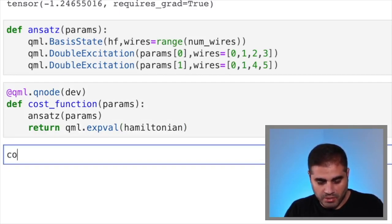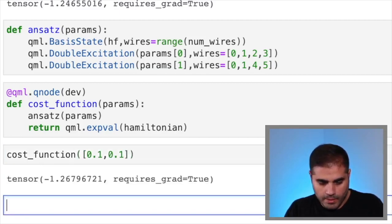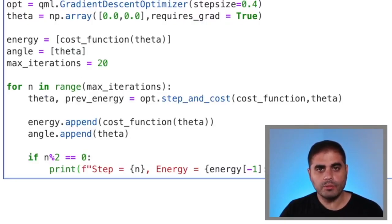Now let's see what happens if we run this for a couple of parameters. So cost function of 0.1, 0.1. And as we see, we get an energy of minus 1.26, which is smaller than minus 1.24 for the Hartree-Fock state. Just by trying out something, we've already found a state that has a lower energy of what was supposed to be the ground state. So now we need to minimize the expectation value of the Hamiltonian. That is, we need to optimize our cost function circuit.